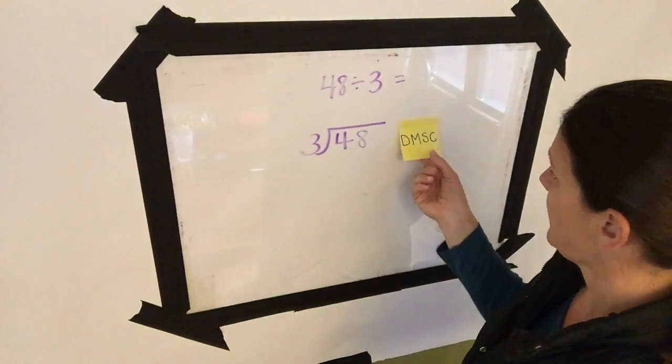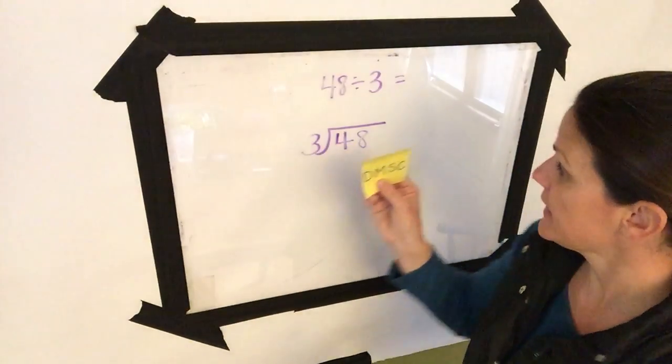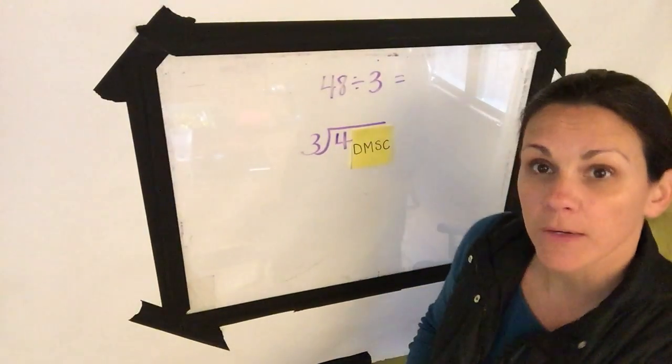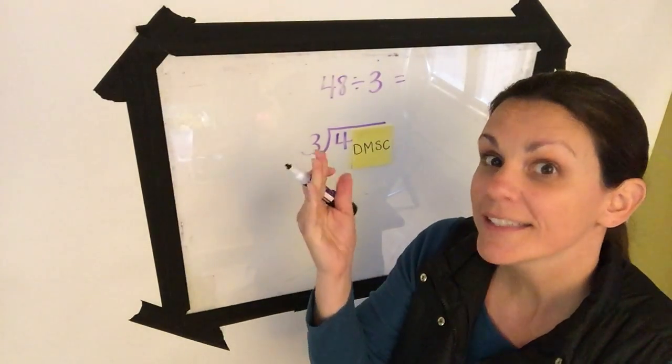Time to divide. We have our DMSC covering up our 8 because we don't need to worry about it right now. First step is to divide.